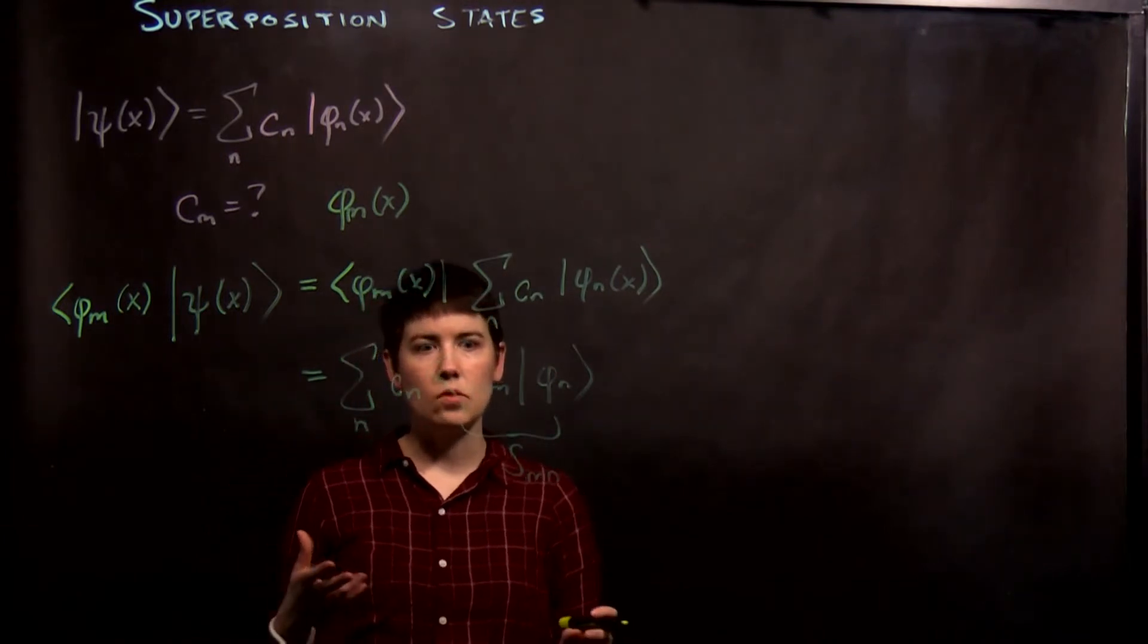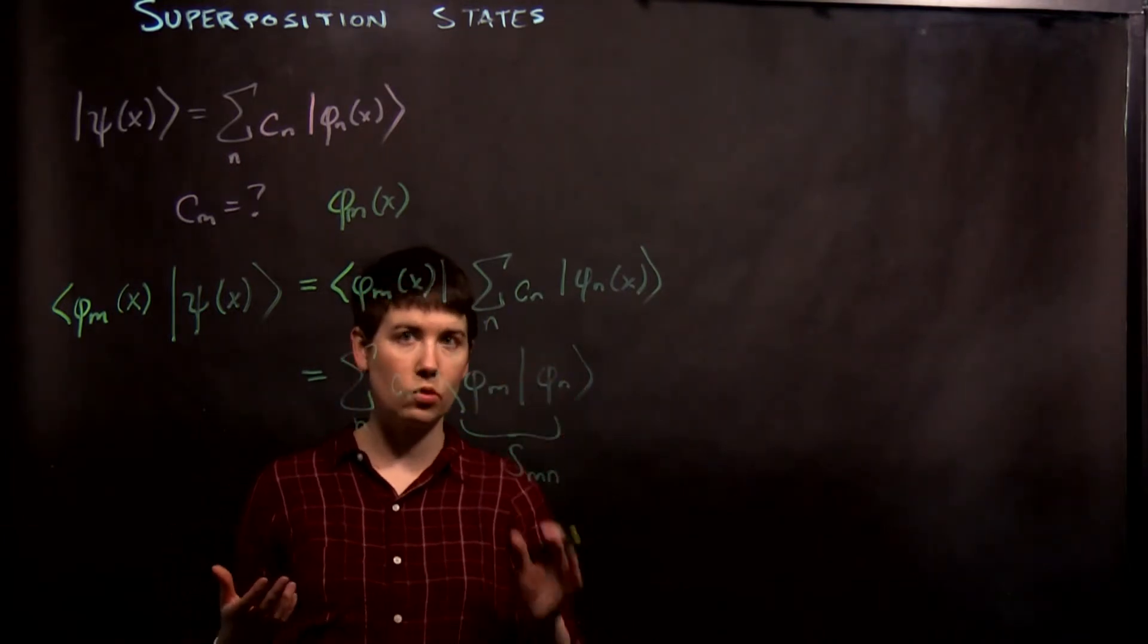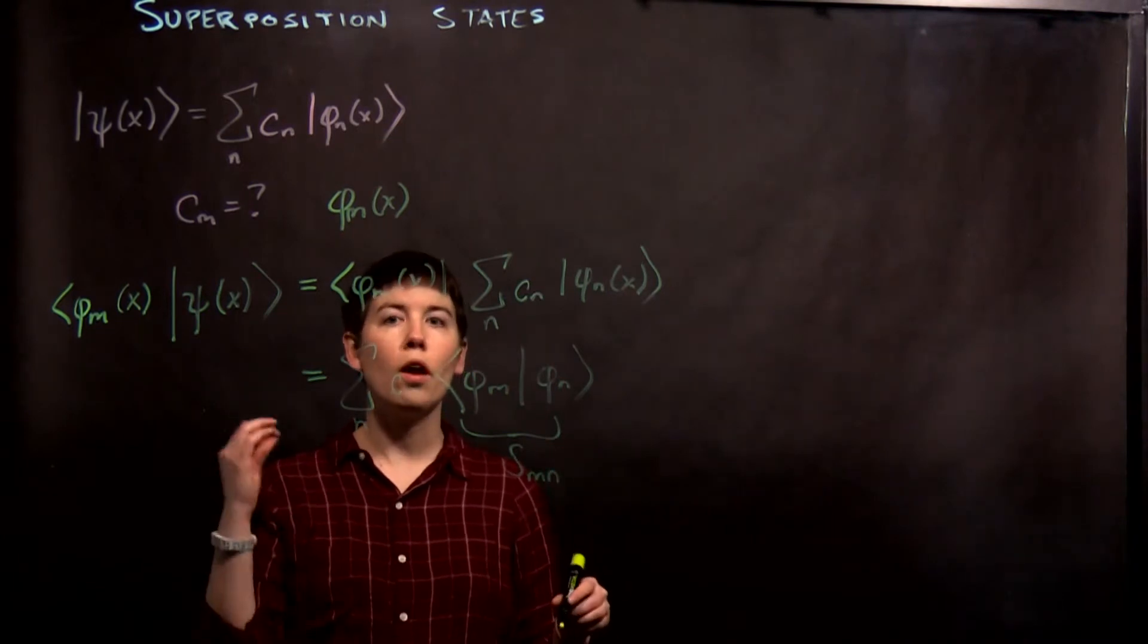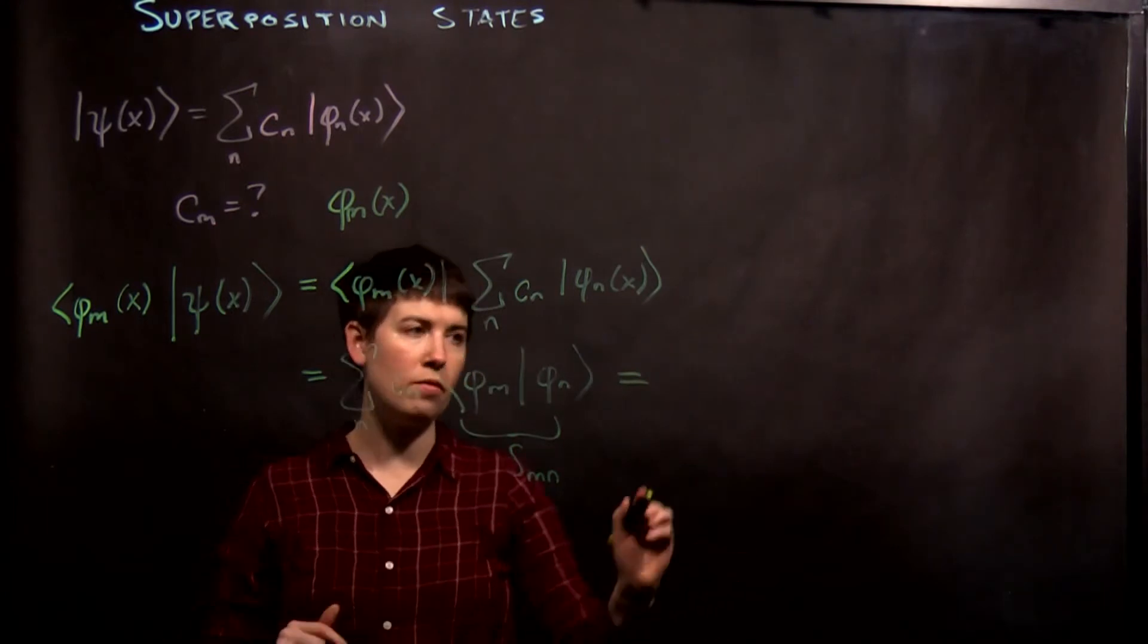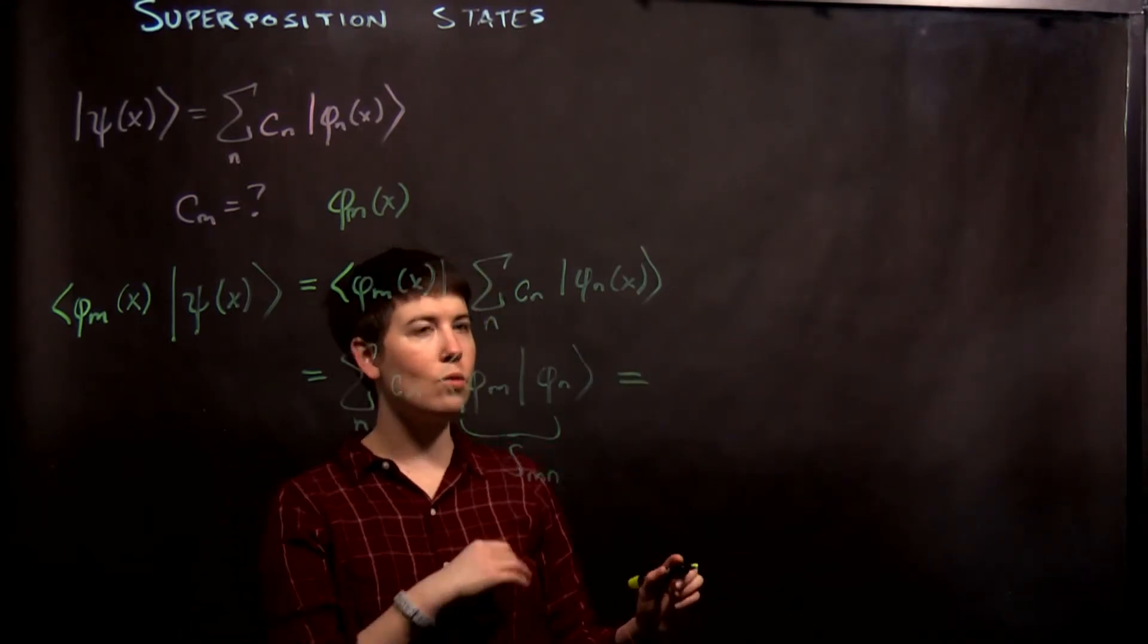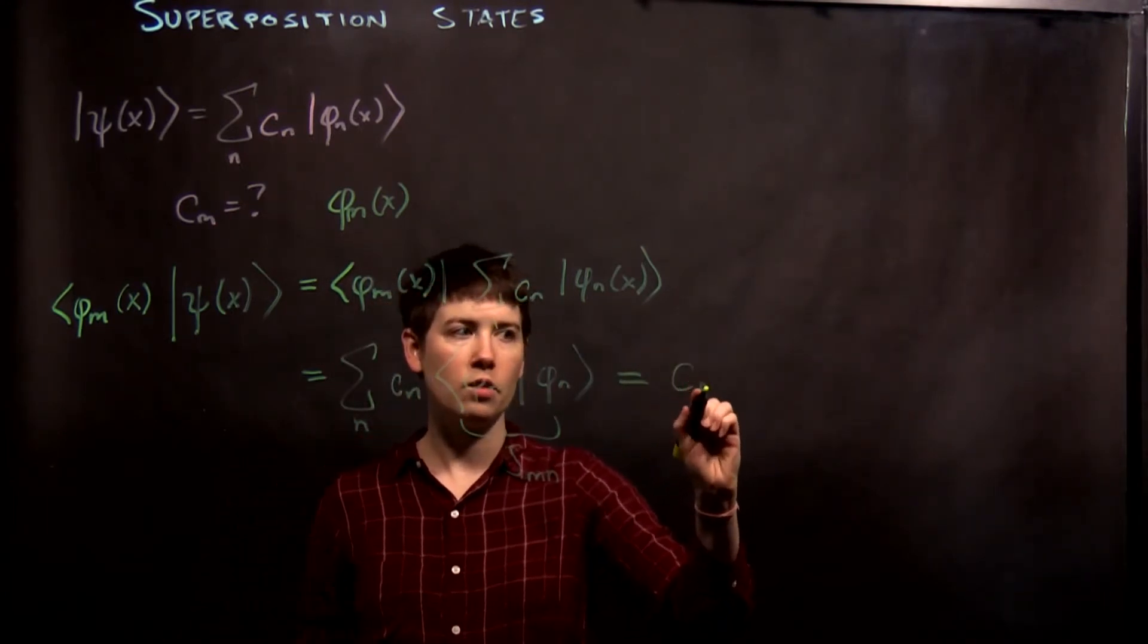So what that means is we now say every term is 0 except where n equals m. So over that summation, it only pulls out one value, and that's where n equals m, so we're left with c m.